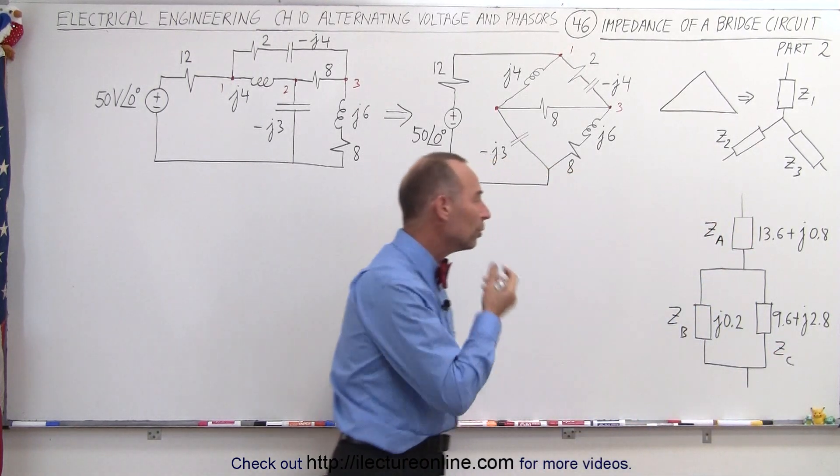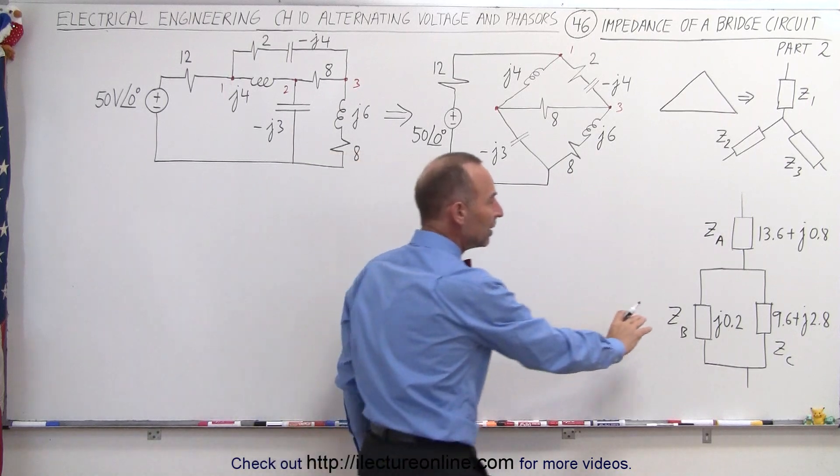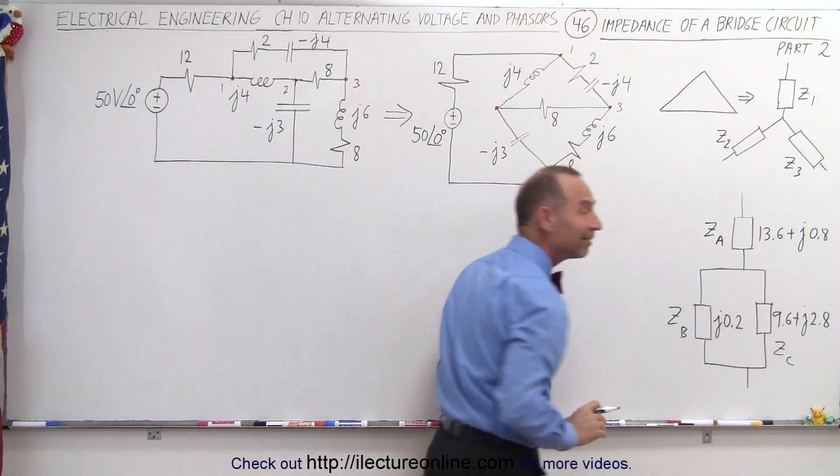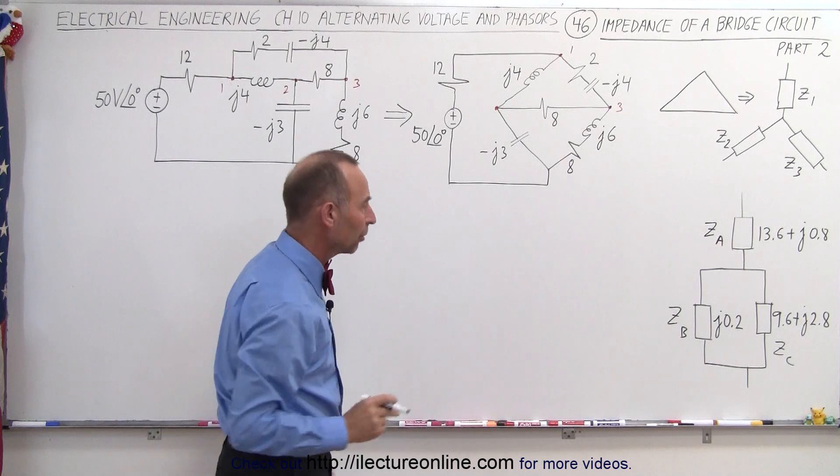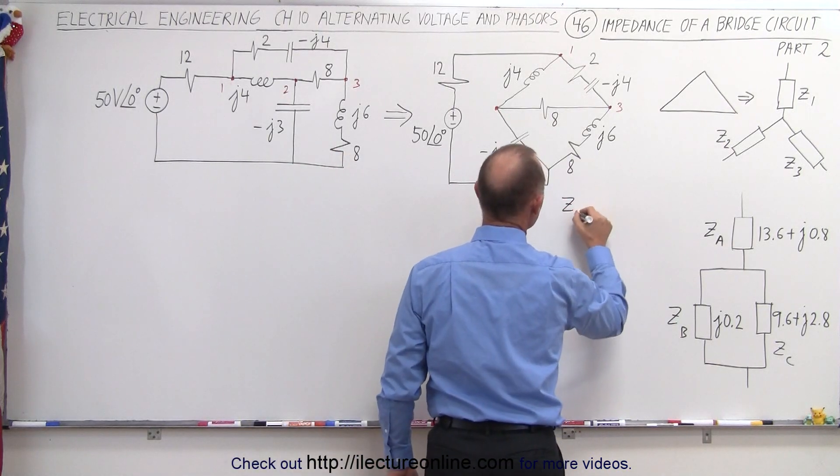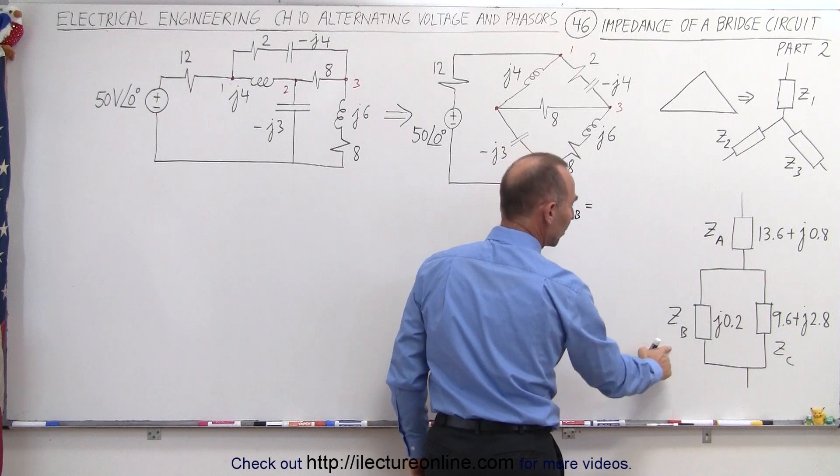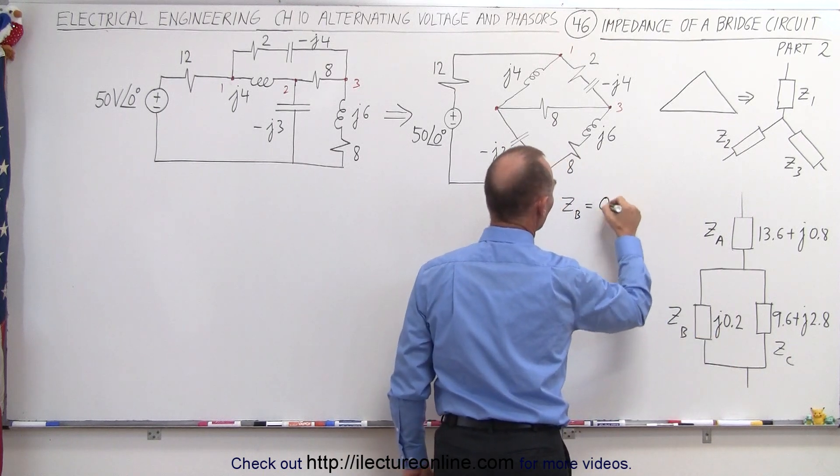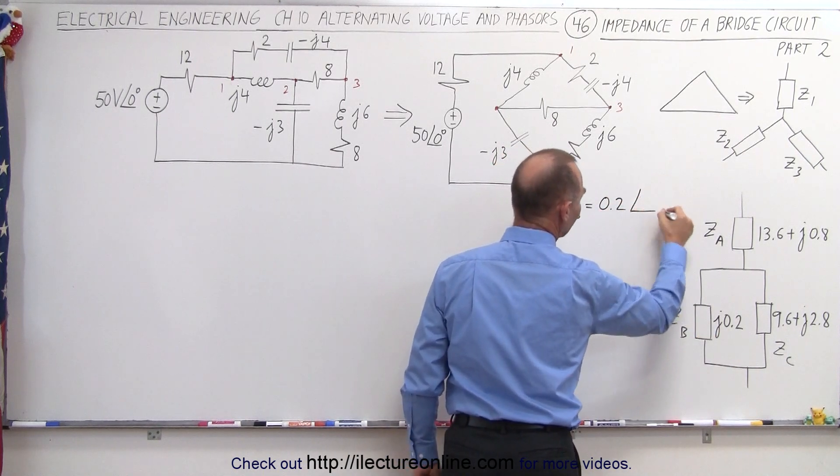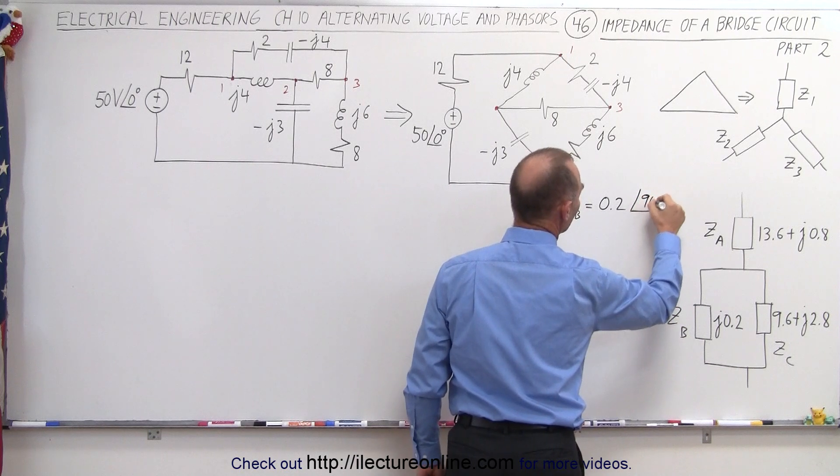What I'm going to do is I'm going to first convert these into the magnitude and phase angle because that makes it easier to multiply. So if we're taking ZB and we write that into magnitude and phase angle, that gives us 0.2 and a phase angle of a positive 90 degrees.